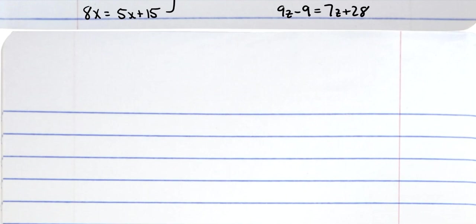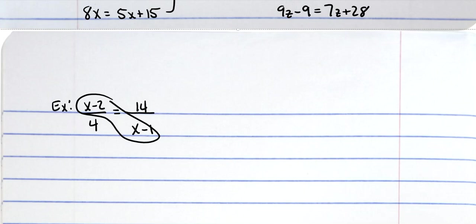Alright, then let's see what happens with the quadratic. So we have x minus 2 over 4 is equal to x minus 1 over 14. So whenever I cross multiply this way, I end up with x minus 2 times x minus 1 is equal to 4 times 14, which is 56.